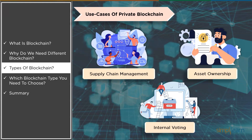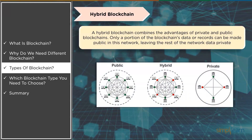Now let's move on to hybrid blockchain. Organizations who desire the best of both worlds will sometimes employ a hybrid blockchain — a type of blockchain that includes characteristics of both private and public blockchain. It allows businesses to create a private permission-based system alongside a public permissionless system, letting them control who has access to certain data stored on the blockchain and what data is made public. In a hybrid blockchain, transactions and records are typically not made public but can be validated if necessary, such as by granting access via a smart contract.